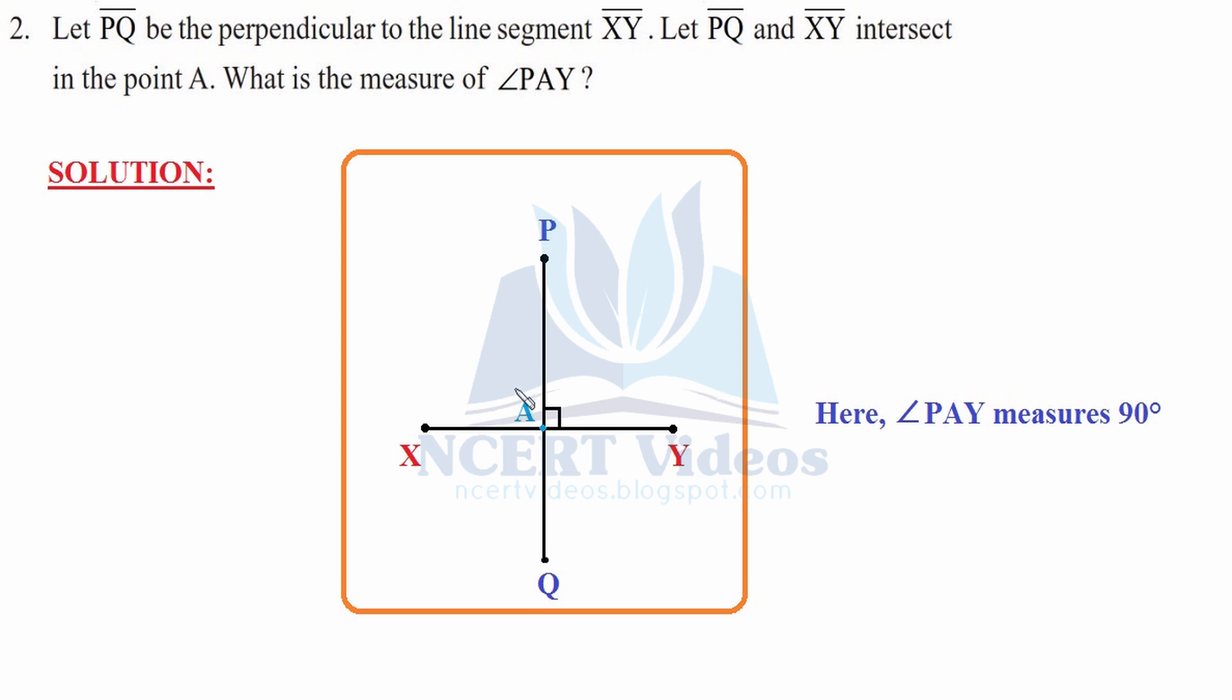We will take XY as a line segment and drop PQ perpendicular to the line segment, which will intersect XY at point A and form a 90 degree angle. Therefore angle PAY measures 90 degrees when it intersects at point A. The measure is 90 since it is perpendicular. That was question two.